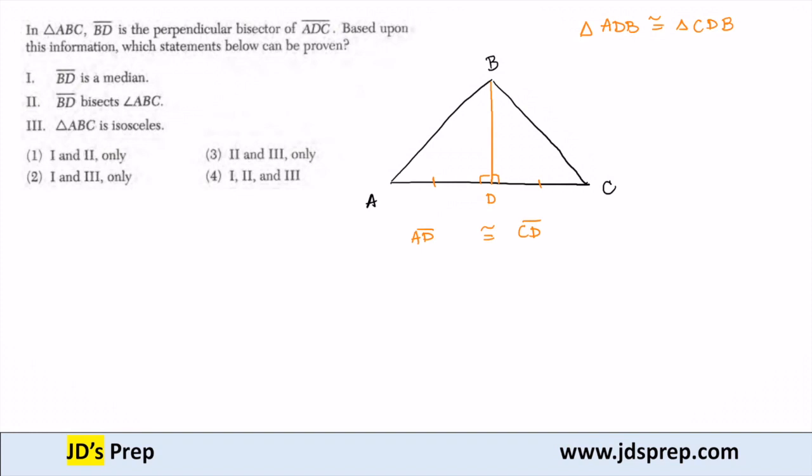And BD is congruent to BD, that's reflexive property. So these two triangles are congruent by side angle side.